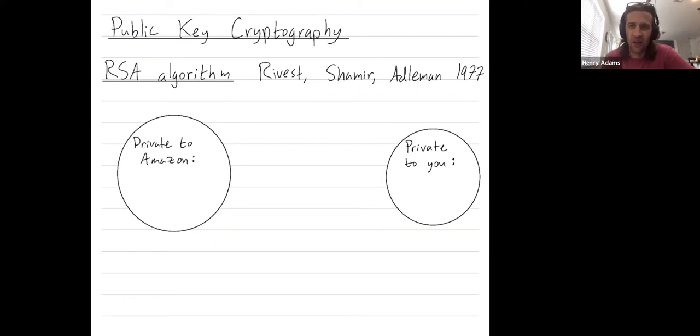Welcome folks. I wanted to describe the mechanism of a particular public key cryptography algorithm called RSA. It's named after three people, Rivest, Shamir, and Adelman, who invented this algorithm around 1977.